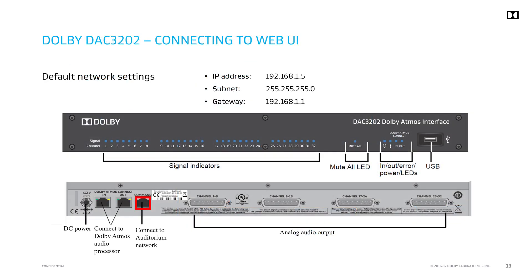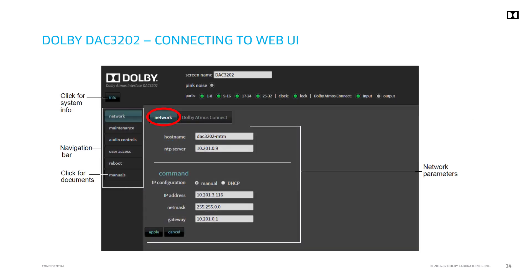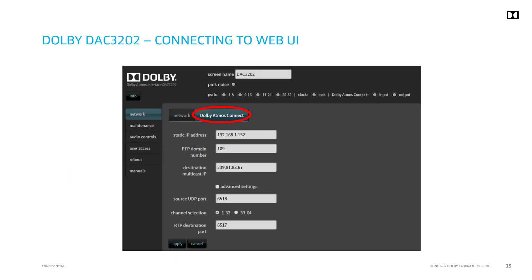The DAC-3202 default network settings are presented here. Navigate the web UI to the page indicated here to check and set network settings. The adjacent tab is shown for checking and setting Dolby Atmos Connect network parameters. In this example, the unit is set to channels 1 through 32.